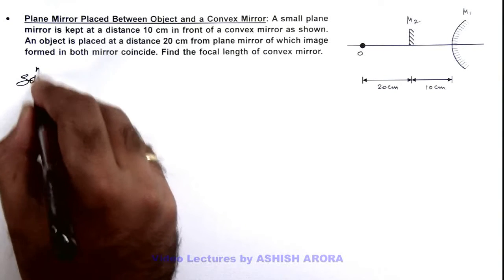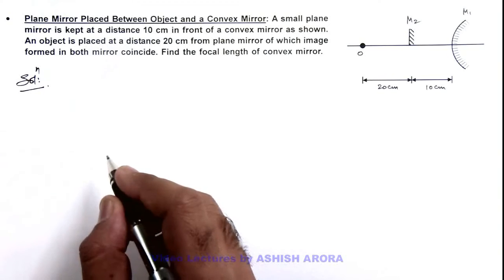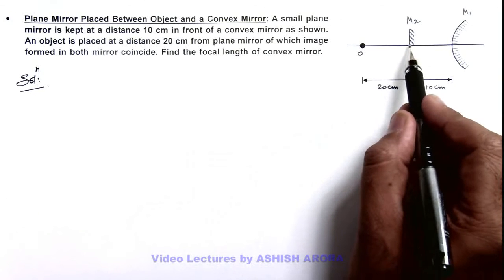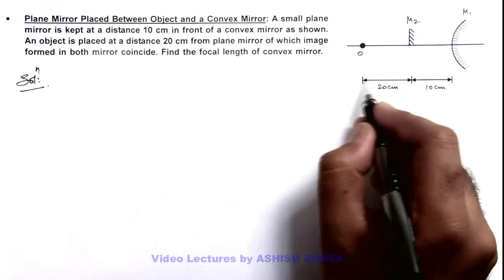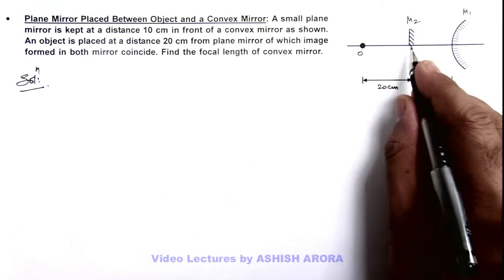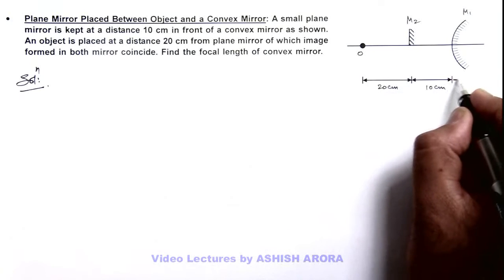In solution, we can first see where the image will be obtained in the plane mirror. The object is located at a distance of 20 centimeters from it, so the image will also be obtained at a distance of 20 centimeters behind it.